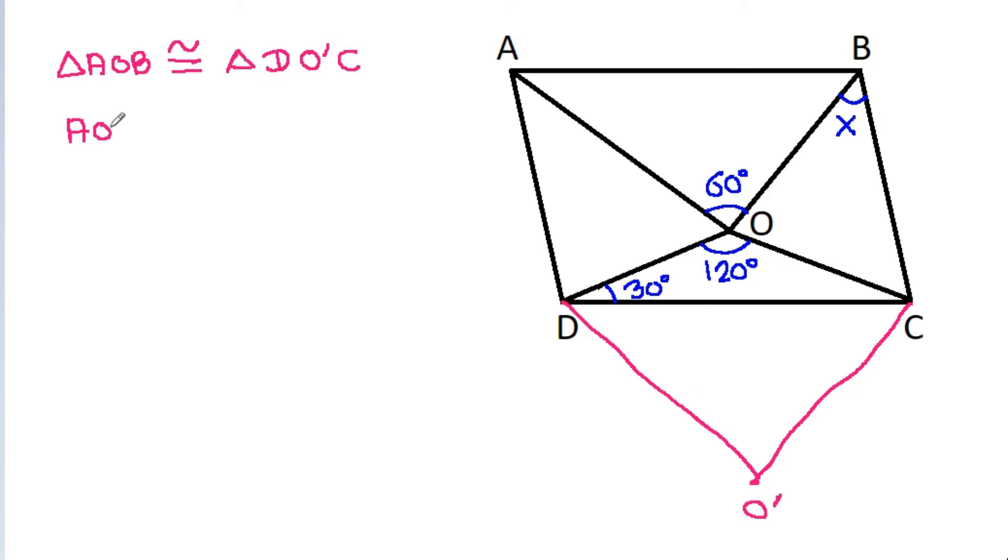Then AO will be congruent to DO' and BO will be congruent to CO'. And angle AOB will be congruent to angle DO'C, so this angle will be 60 degrees.